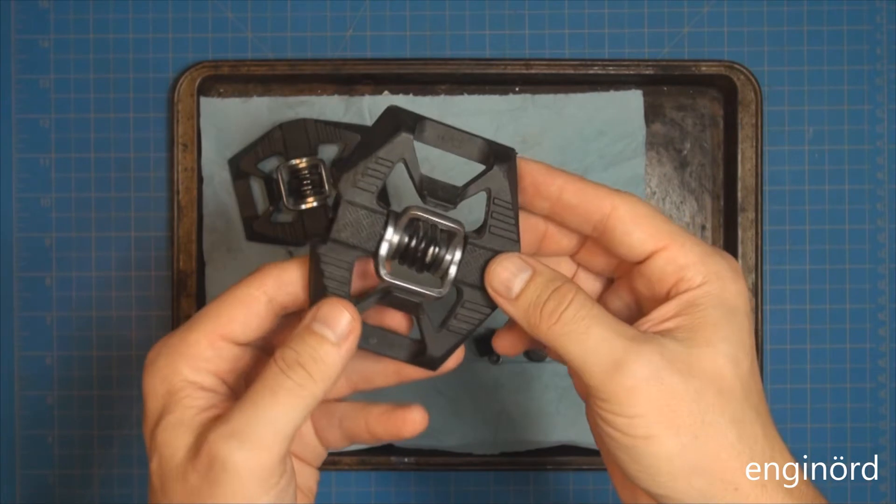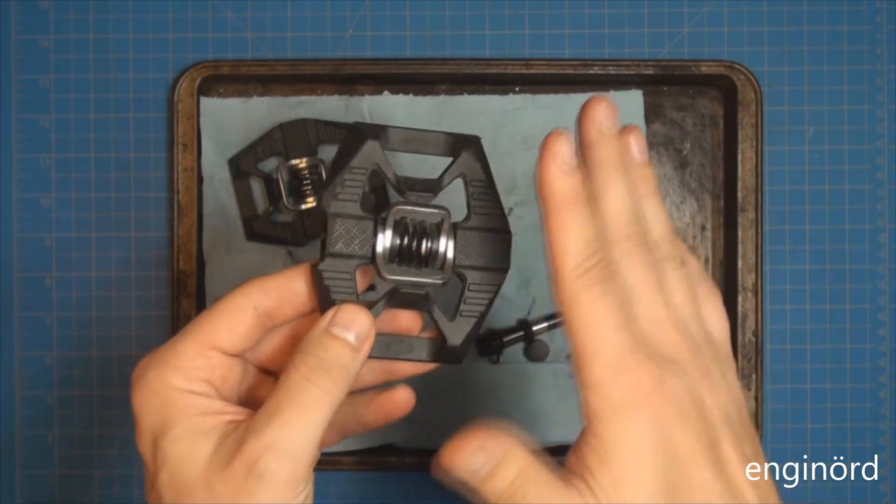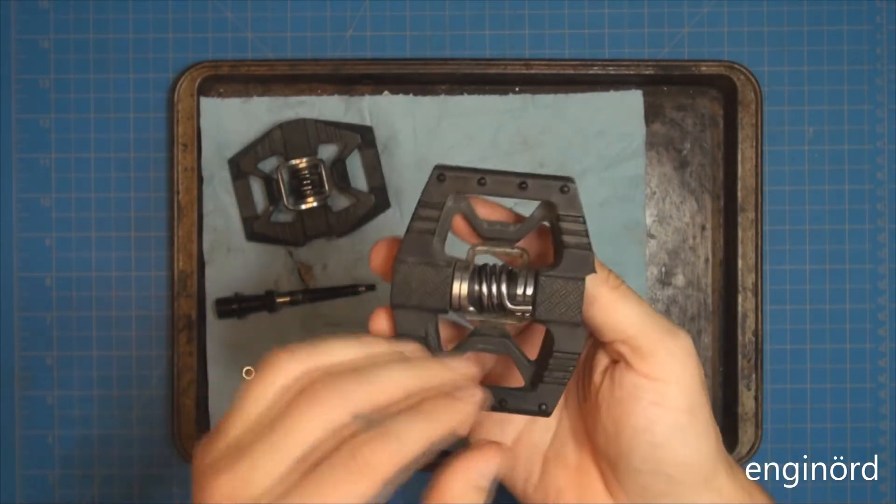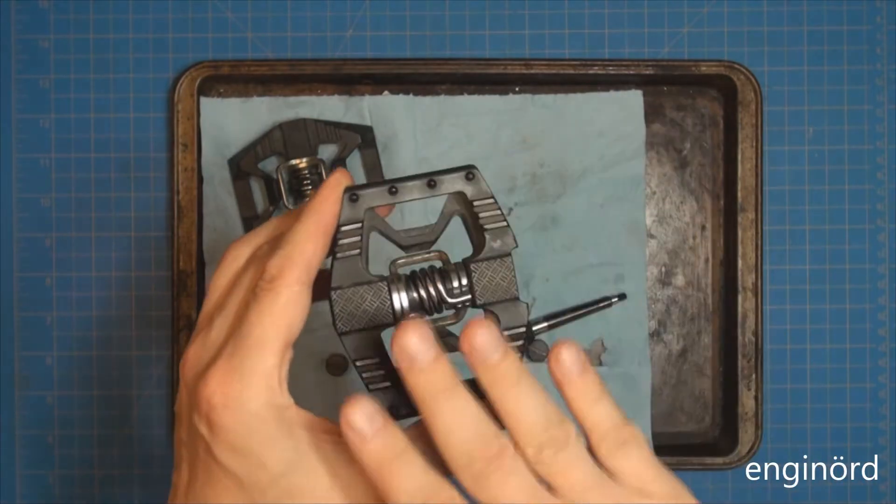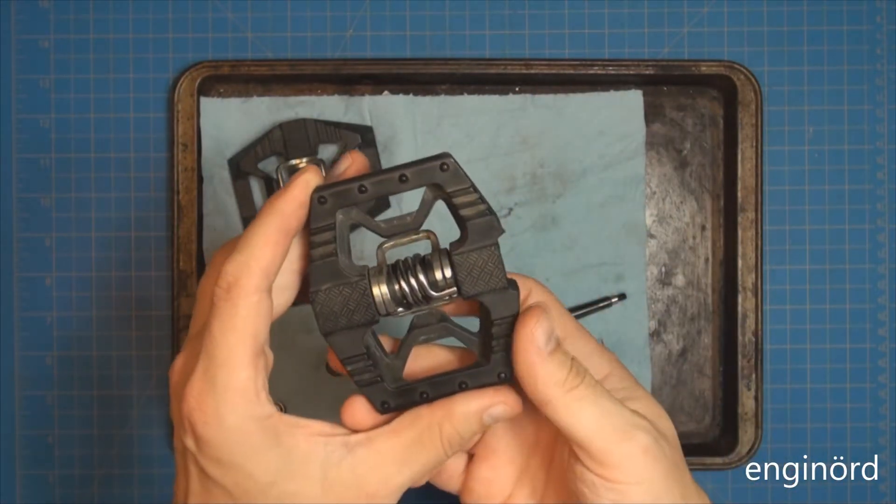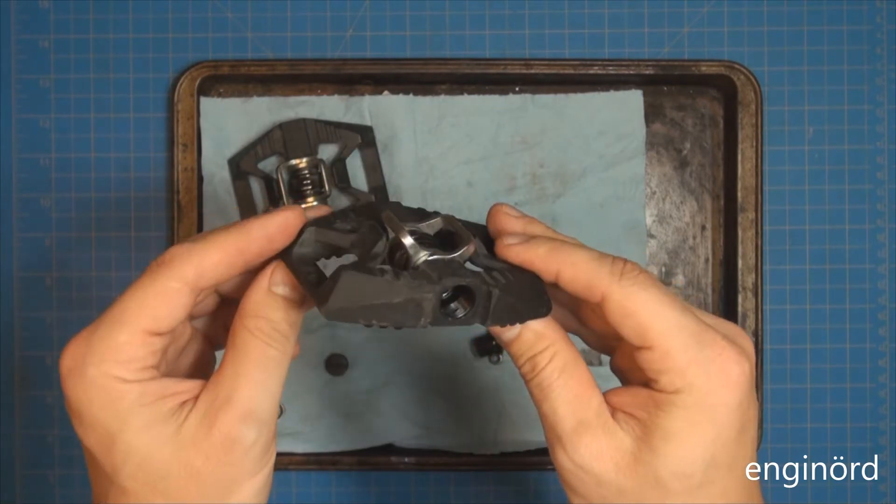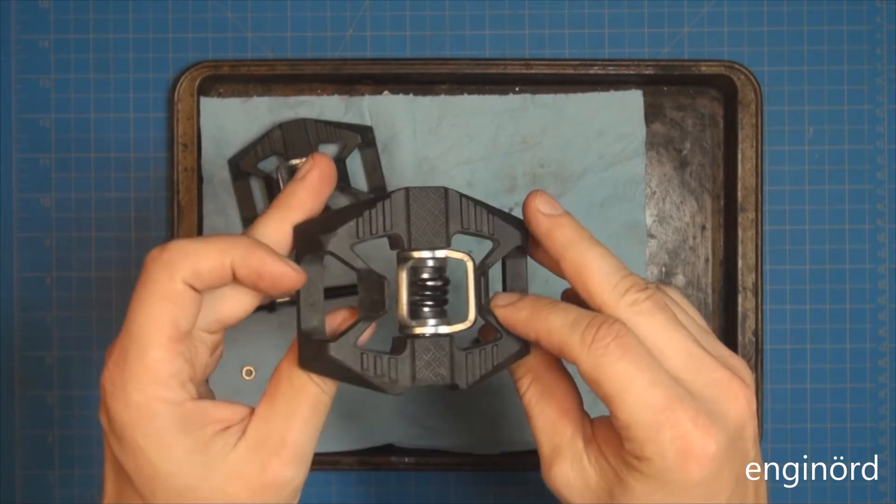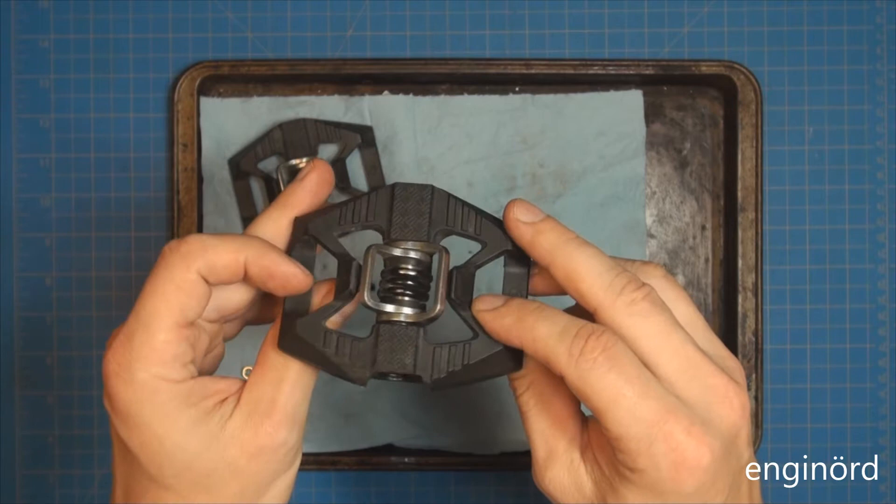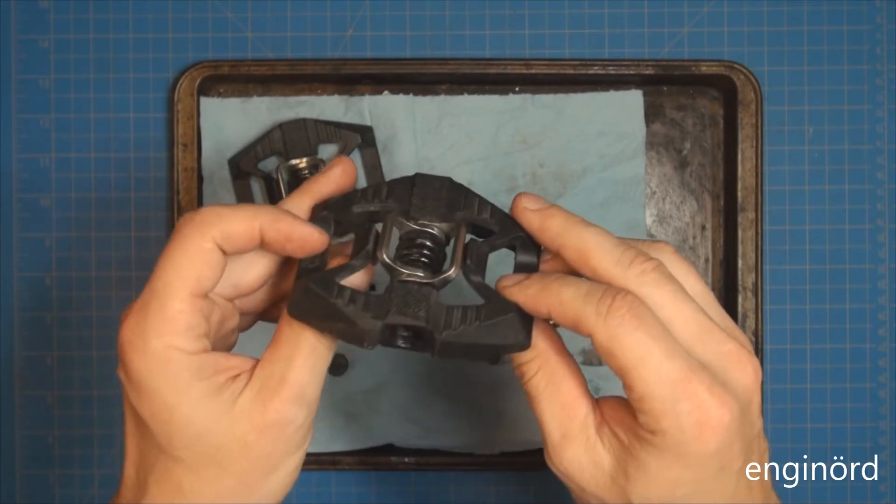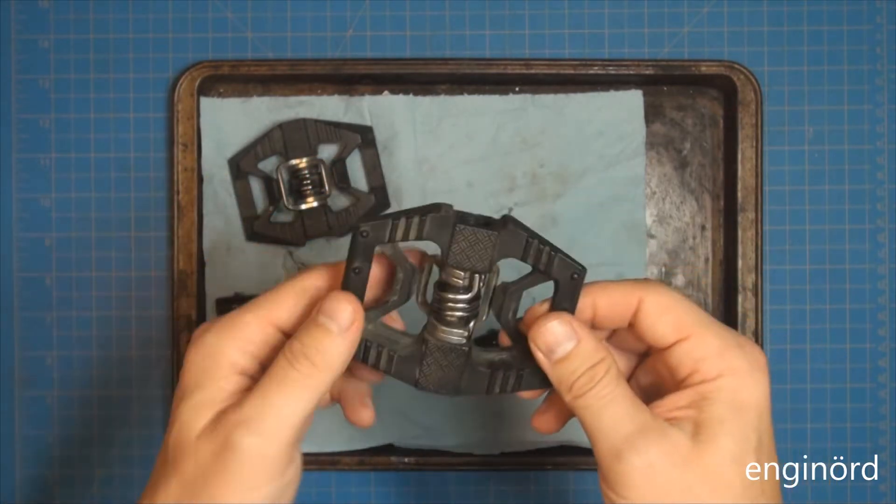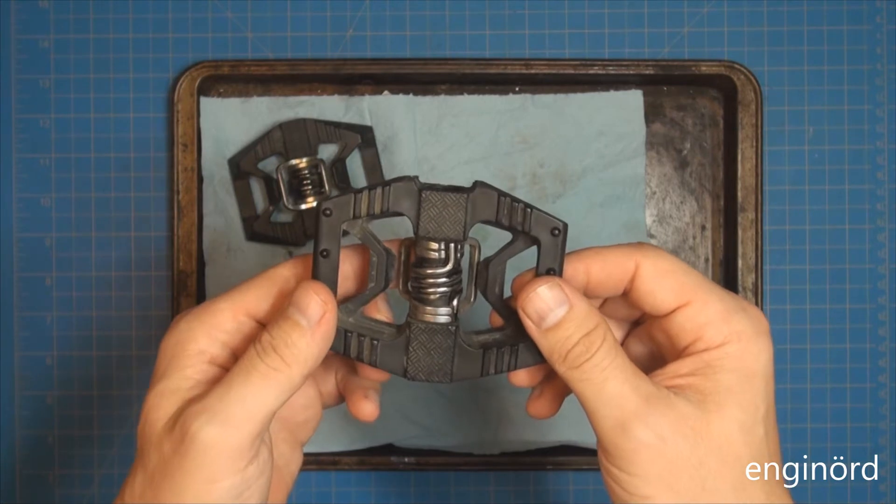So you can see one side of the pedal will accept the shoes and then the other side doesn't have anything, so it's basically flat. I purchased this about two years ago. My wife used it. She put about 15,000 kilometers in them, so that's about 10,000 miles.